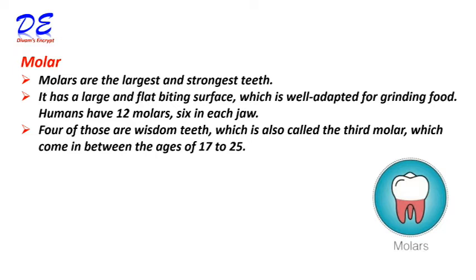Four of those are wisdom teeth, also called the third molar, which come in between the ages of 17 to 25.